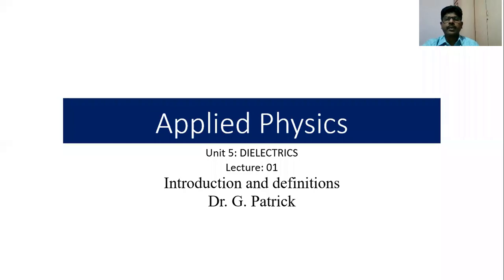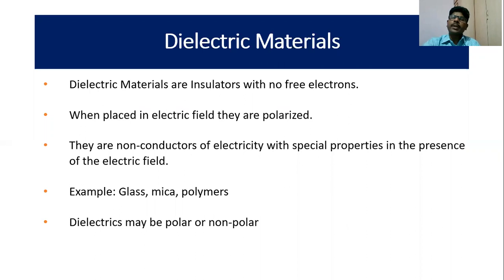In this lecture we are going to study about introduction and definitions of dielectric materials. This is Unit 5, Lecture 1. Dielectric materials are insulators with no free electrons. When placed in an electric field they are polarized — that is a very unique property of these materials. They are non-conductors of electricity with special properties in the presence of an electric field.